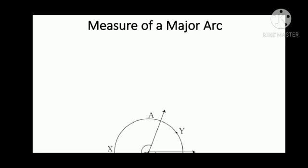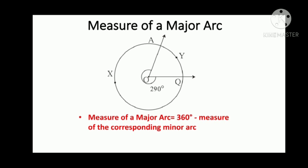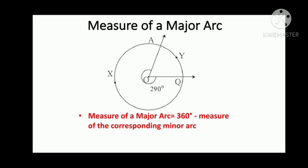Measure of the major arc. In the given figure, the measure of a complete angle we know is 360 degrees. Measure of angle AOQ which is a minor arc is 70 degrees. Therefore, to calculate the measure of a major arc, the formula we use is 360 degrees minus measure of the corresponding minor arc.